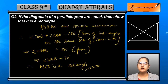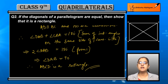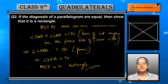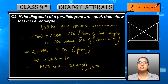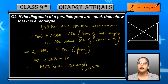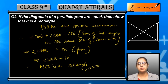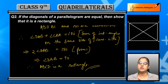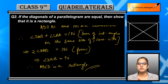This quadrilateral is already a parallelogram, and we have proved that one angle is 90 degrees. Since a parallelogram with opposite sides equal and parallel, if we prove one angle to be 90 degrees, we can conclude that it is a rectangle.